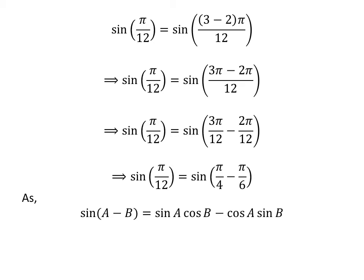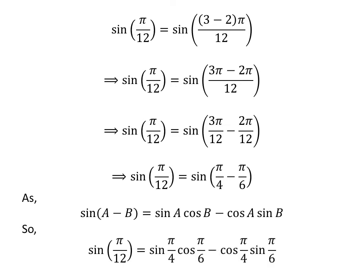We know the famous trigonometry identity: sine of a minus b is equal to sine of a times cosine of b minus cosine of a times sine of b. Applying this identity gives us sine of pi upon 12 is equal to sine of pi upon 4 times cosine of pi upon 6 minus cosine of pi upon 4 times sine of pi upon 6.